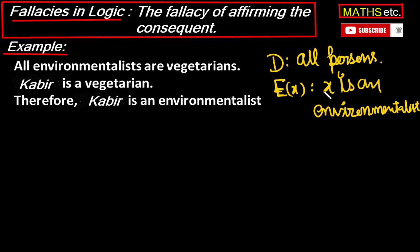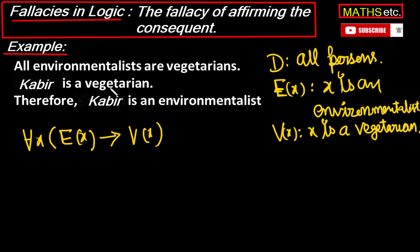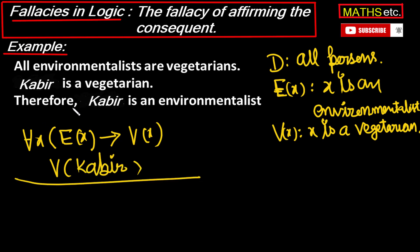Let's quickly write this in argument form. The domain of discourse is all persons. Let E(x) denote 'x is an environmentalist' and V(x) denote 'x is a vegetarian.' 'All environmentalists are vegetarians' becomes: for every x, if x is an environmentalist then x is a vegetarian — i.e., ∀x, E(x)→V(x). The second premise 'Kabir is vegetarian' becomes V(Kabir). The conclusion 'Kabir is an environmentalist' becomes E(Kabir). So the argument form is: ∀x, E(x)→V(x); V(a) therefore E(a).